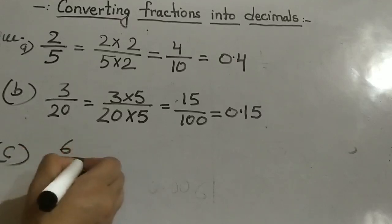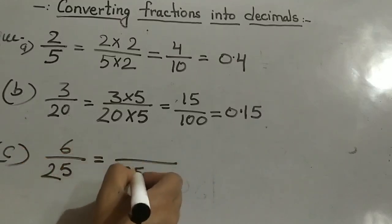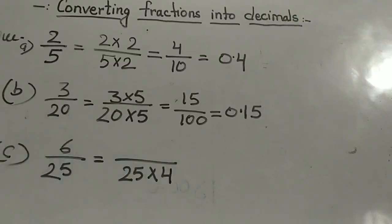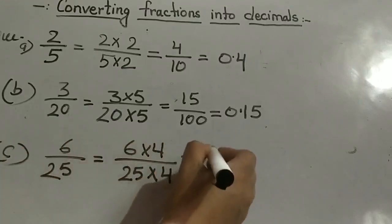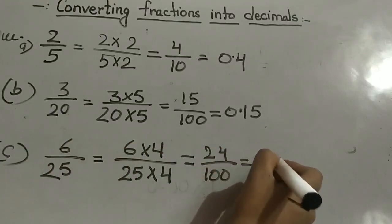So 3 times 5 are 15. 15 upon 100, or 0.15. Yes. One more example: 6 upon 25. So what will be the combination of 25 to make it 100? 25 times 4. So 6 times 4 is 24 upon 100, equal to 0.24.